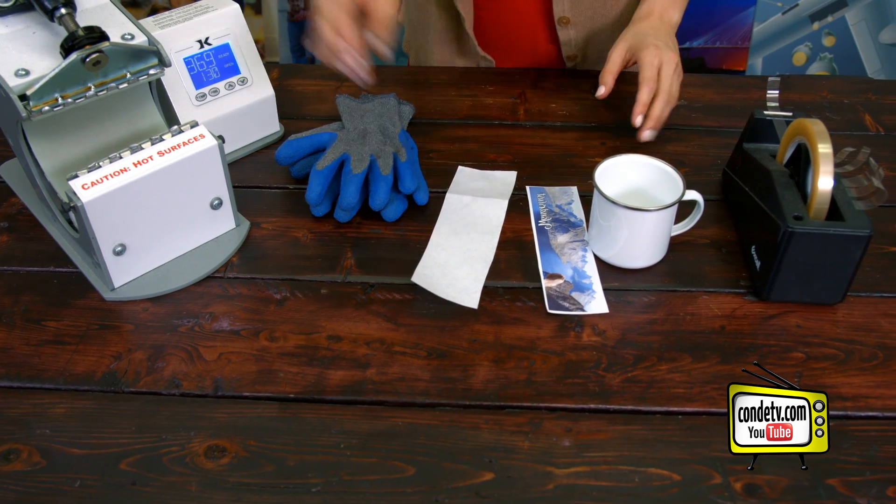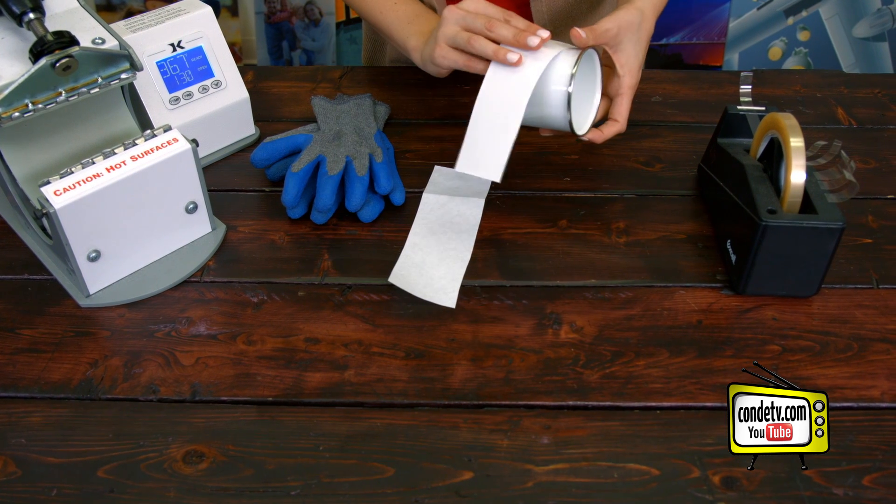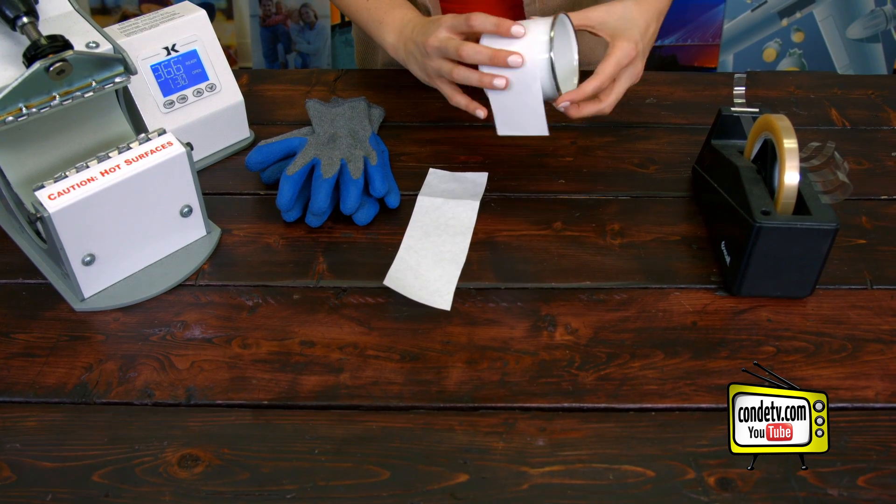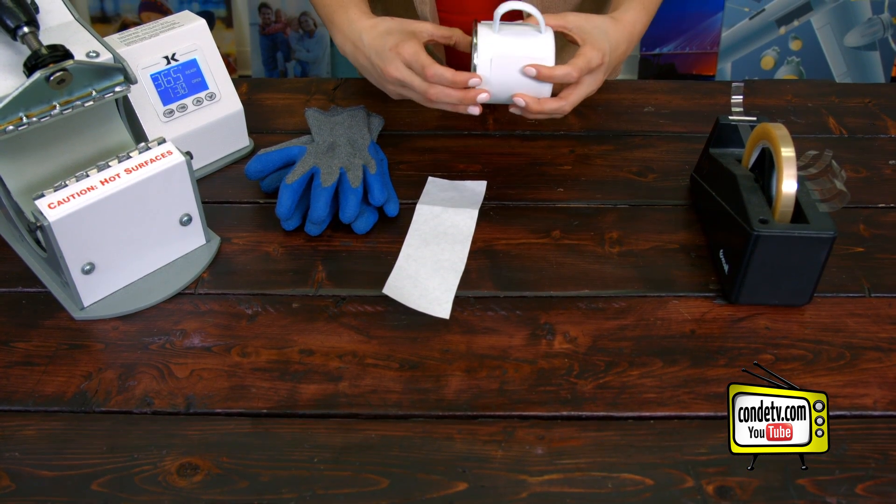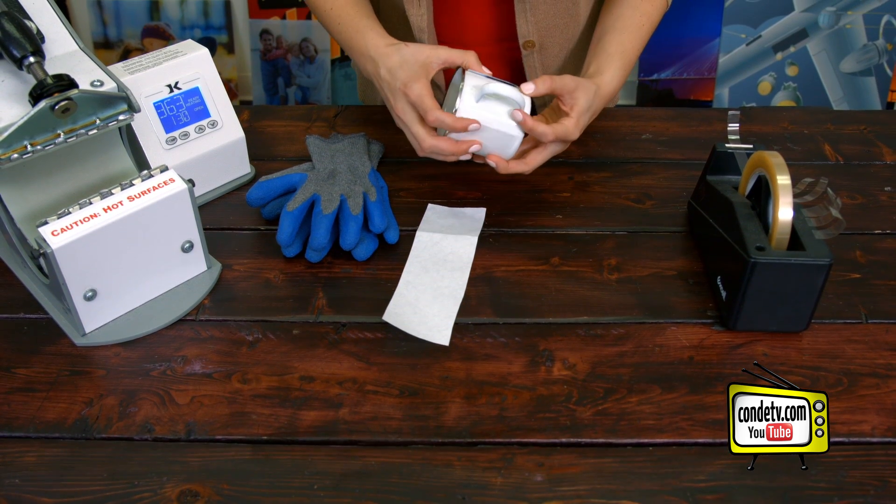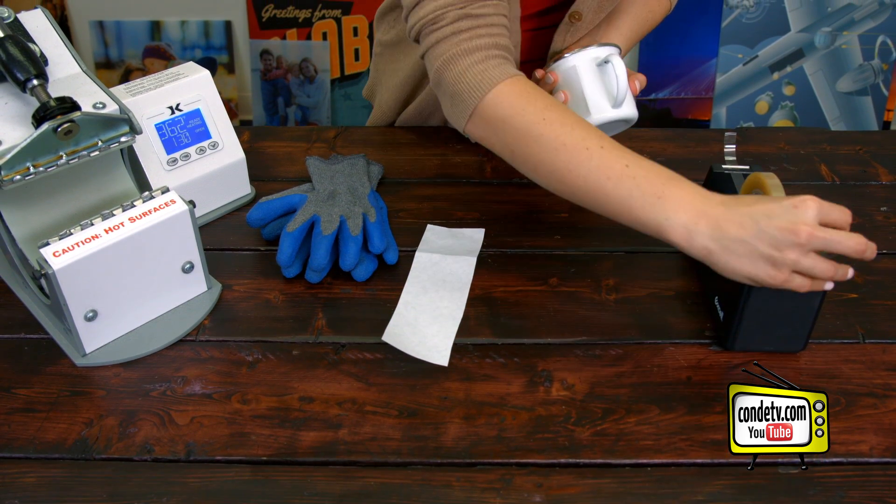Now the first step is to align the image. So we're just going to wrap it around our camp cup. And once we get it where we want it, we're going to secure it with some heat tape.